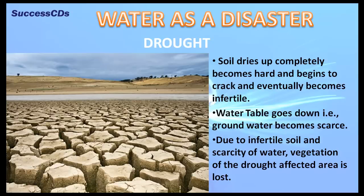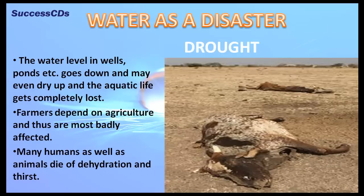The water level in wells, ponds, etc. goes down and may even dry up, and the aquatic life gets completely lost. Farmers depend on agriculture and thus are most badly affected.